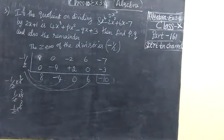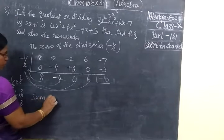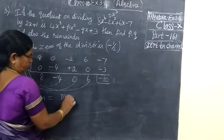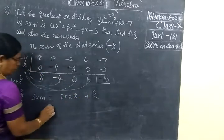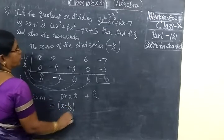We check the answer. Minus 10. Then 8 minus 4, 0, 6. So now we write the sum. If you are getting quotient into divisor plus remainder. So divisor can have x plus half, isn't it?